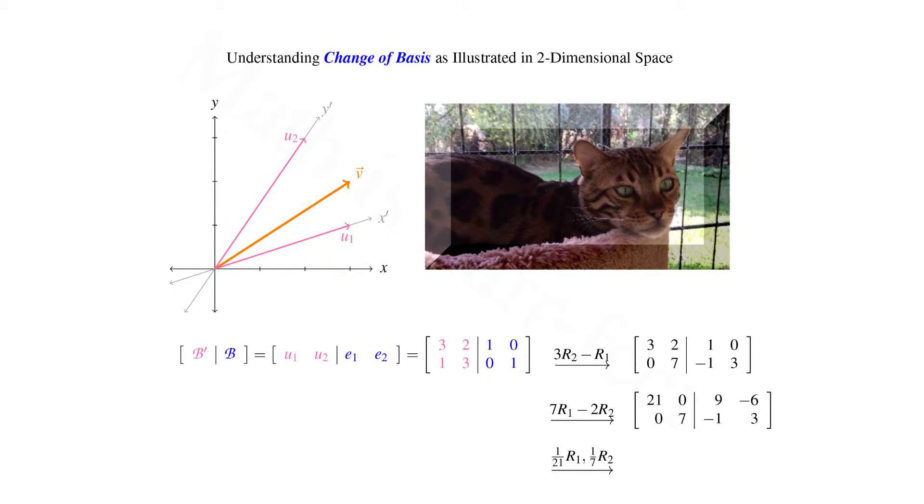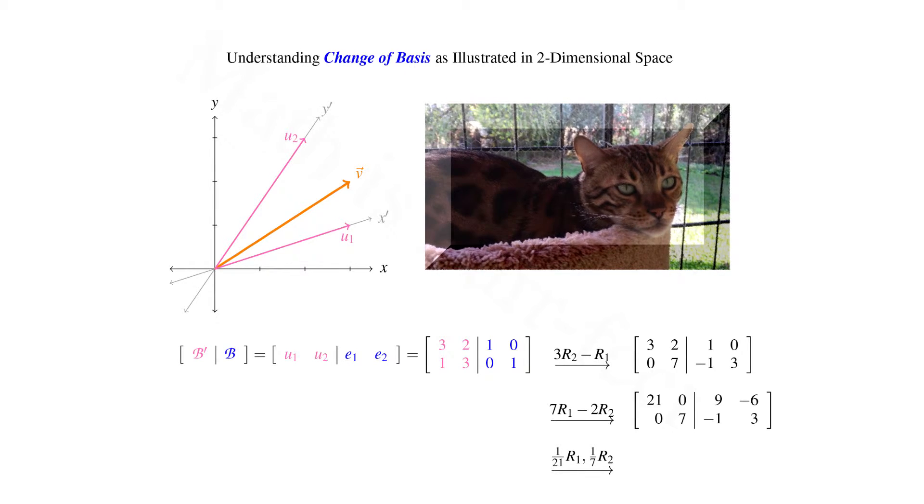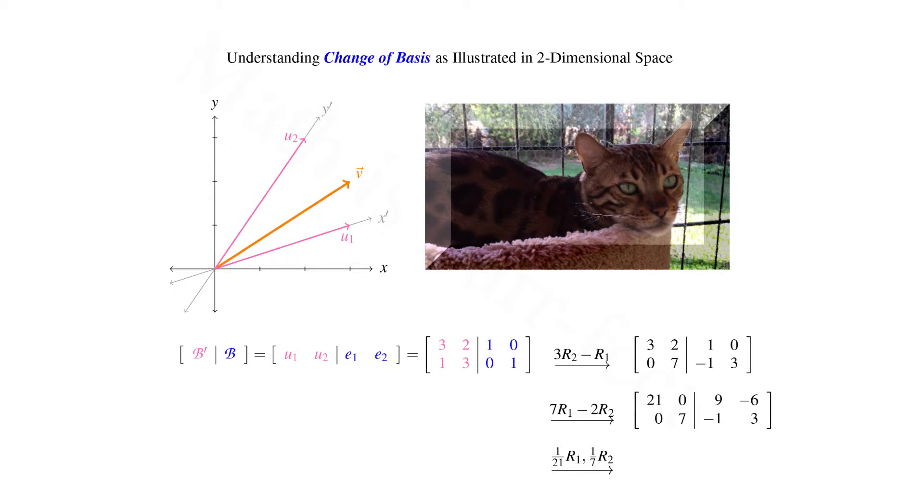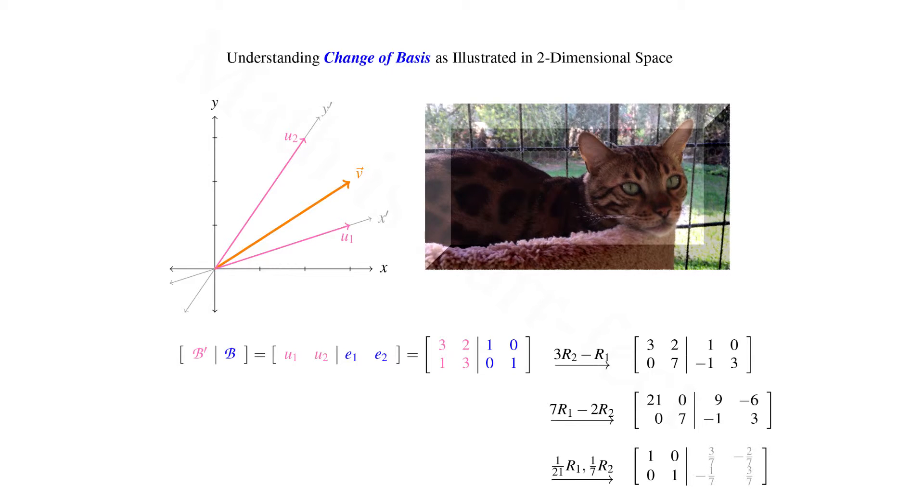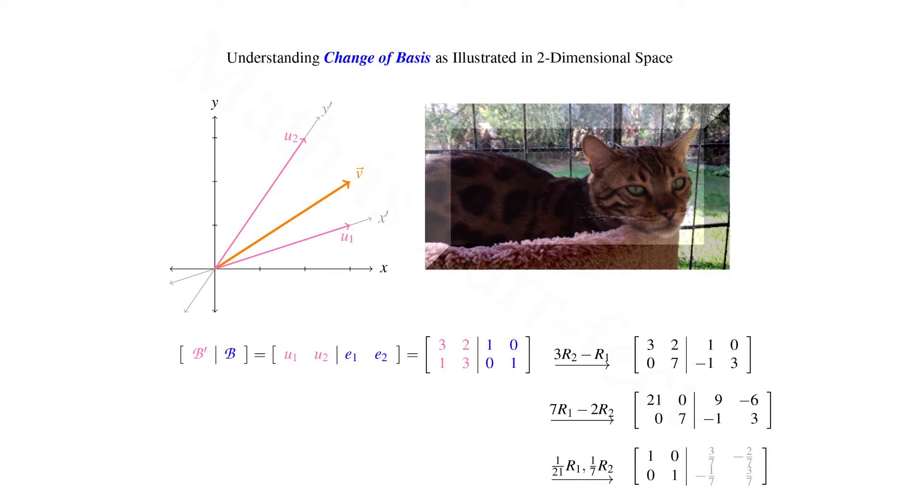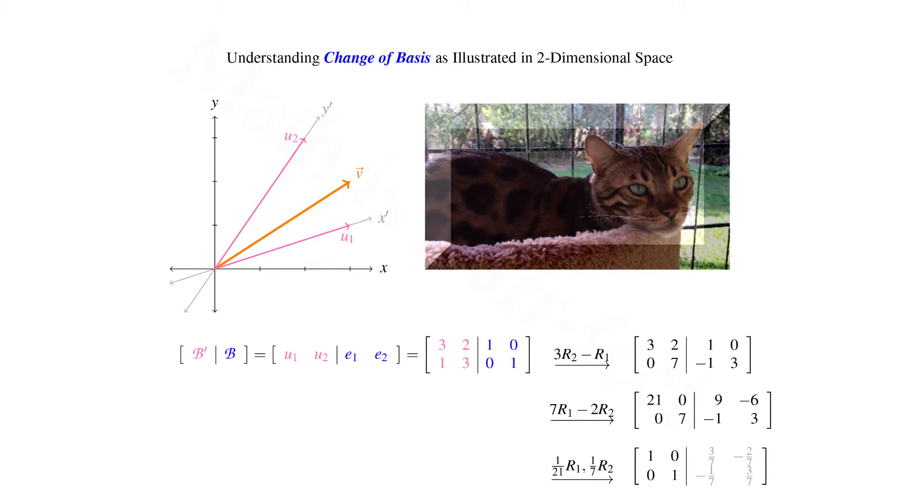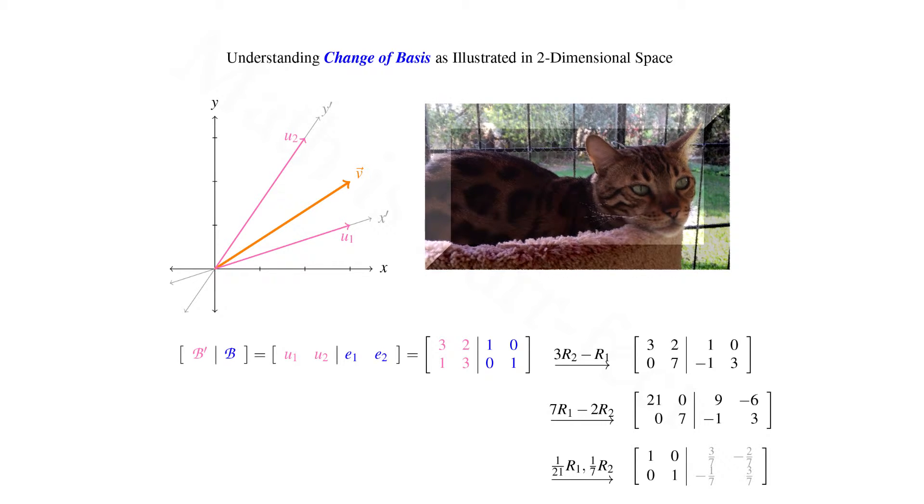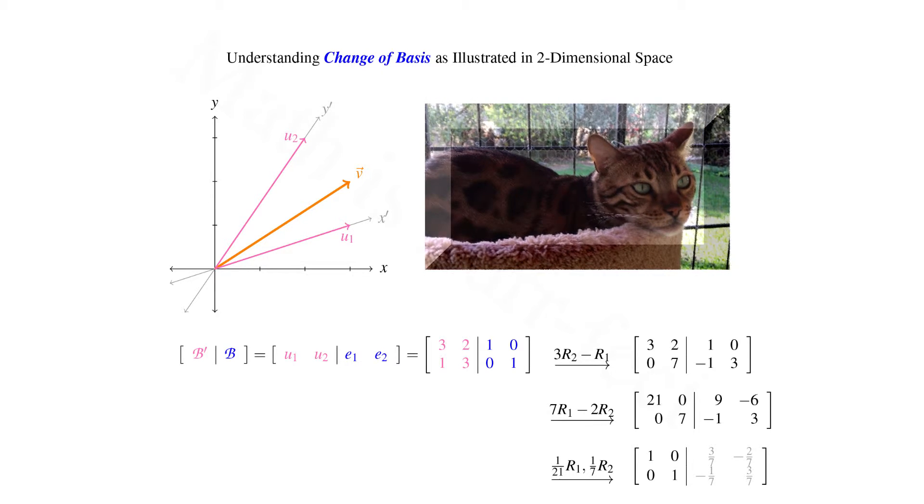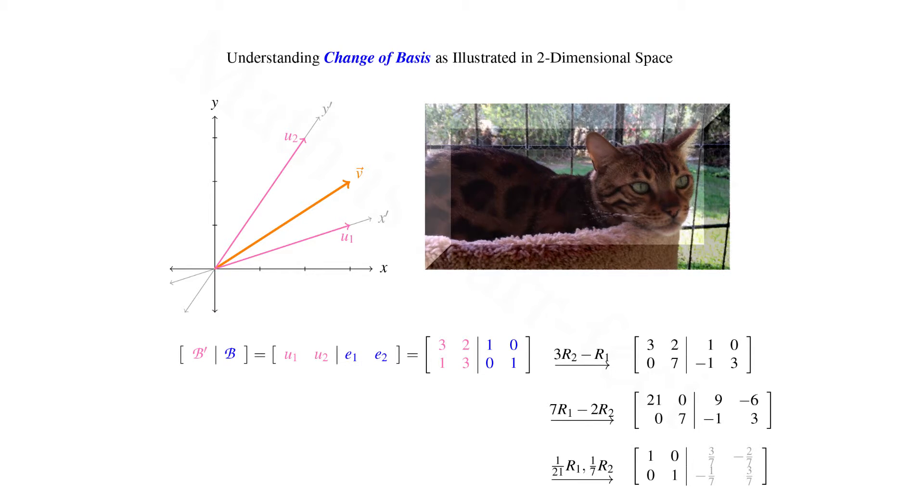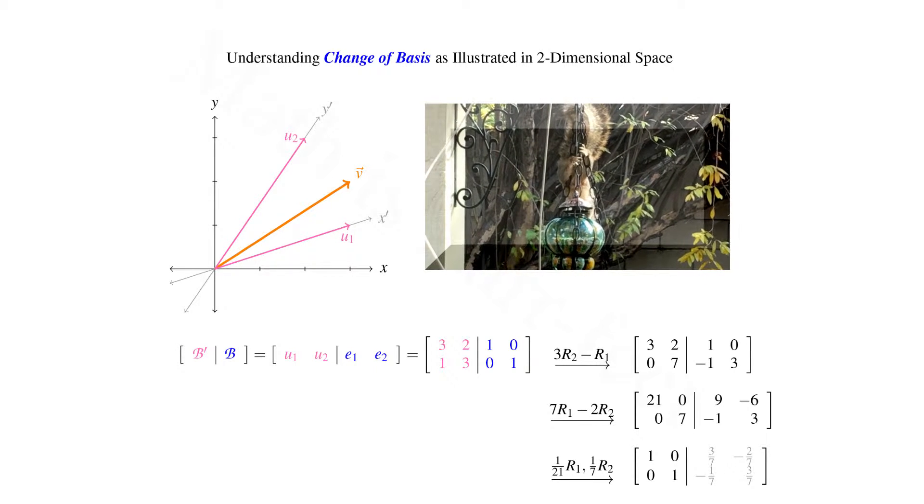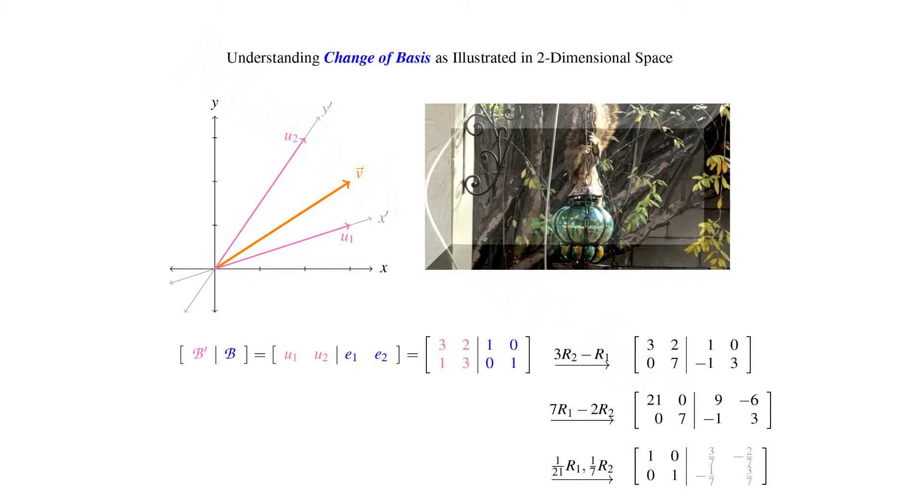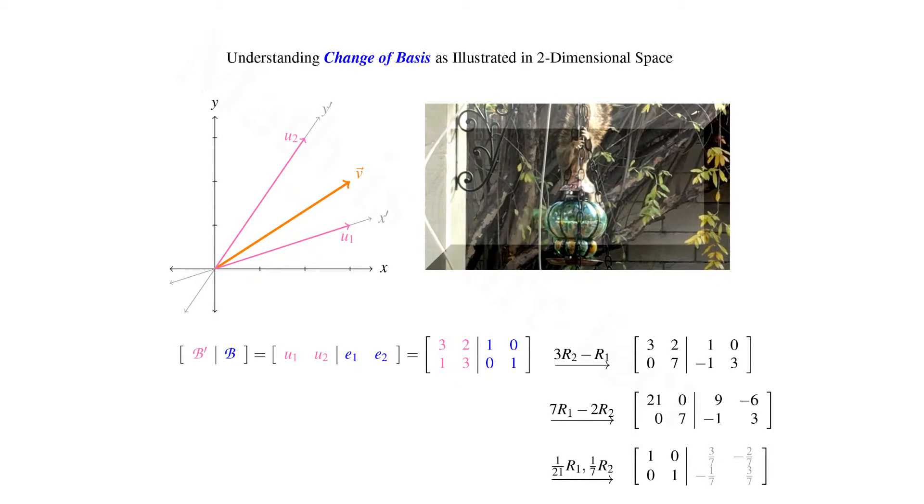The final step in order to get the identity matrix on the left of the augment is to divide the entries in the first row by 21, and the entries in the second by 7. What results is the identity on the left, and the matrix with first row 9 over 21 equals 3 over 7, and negative 6 over 21 equals negative 2 over 7, and second row, negative 1 over 7 and 3 over 7. This matrix to the right of the augment is our transition matrix, which takes the component vector of v with respect to the initial basis, and translates it into the component vector of v with respect to the second basis.